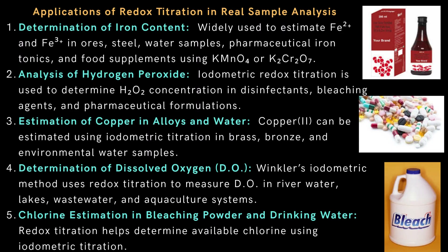Applications of redox titration in real sample analysis include: (1) Determination of iron content — estimating Fe²⁺ and Fe³⁺ in ores, steel, water samples, pharmaceutical iron tonics, and food supplements using KMnO4 or K2Cr2O7. (2) Analysis of hydrogen peroxide — iodometric redox titration determines H2O2 concentration in disinfectants, bleaching agents, and pharmaceutical formulations. (3) Estimation of copper in alloys and water — copper can be estimated using iodometric titration in brass, bronze, and environmental water samples. (4) Determination of dissolved oxygen (DO) — Winkler's iodometric method measures DO in river water, lakes, wastewater, and aquaculture systems. (5) Chlorine estimation in bleaching powder and drinking water — redox titration determines available chlorine using iodometric titration.